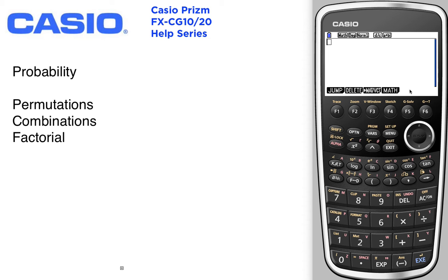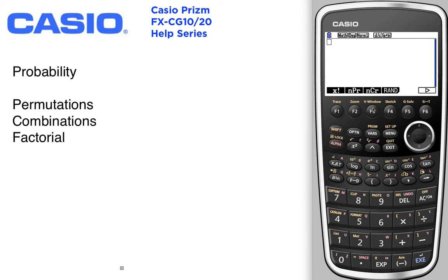Probability calculations, permutations, combinations, and factorials. Let's go into options, more options, into probability. Here we'll see factorials, permutations, combinations.